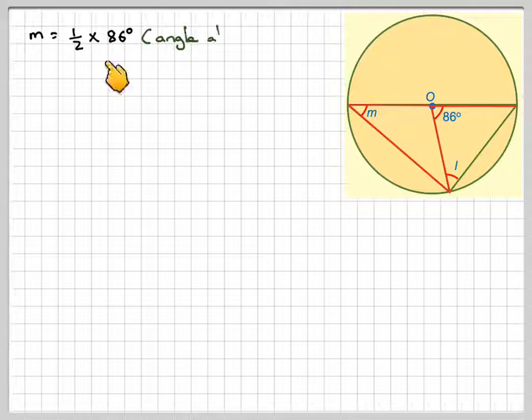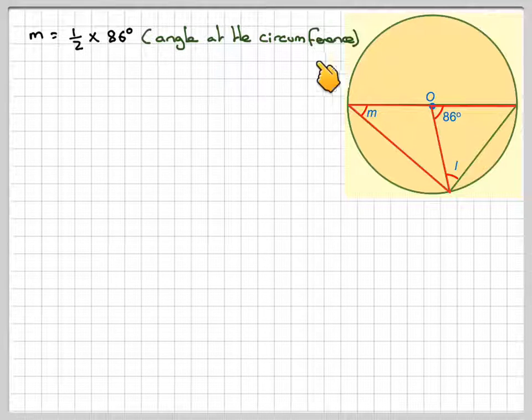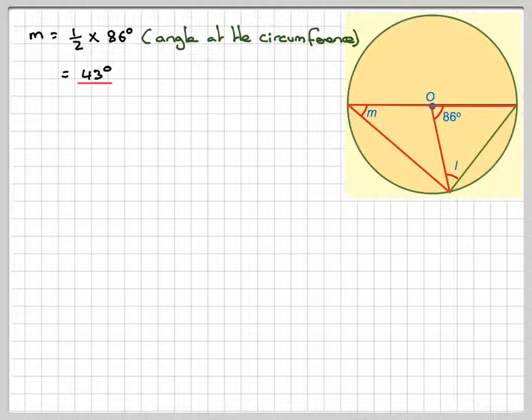So M will be half times 86, the angle at the circumference, which is going to be equal to 43. Thank you very much for watching.